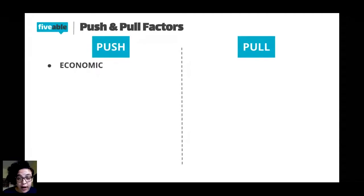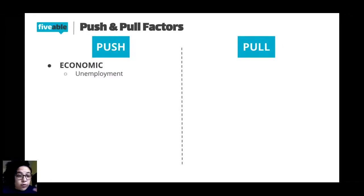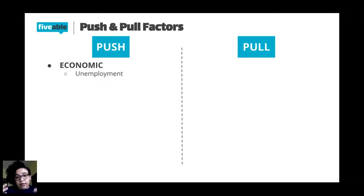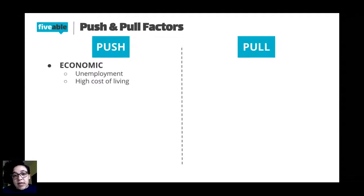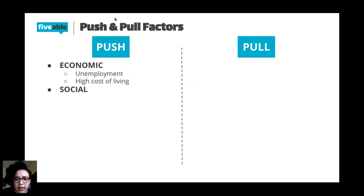In terms of push factors, there are economic factors — anything having to do with money: jobs, class, trade. A reason to leave could be unemployment — you can't find a job, and you need money to survive and feed your family. Another reason could be a high cost of living: the rent is too high, you can't afford it, or you're not saving any money, so it's not worth staying. You don't have to travel across the world, but you can't stay here.